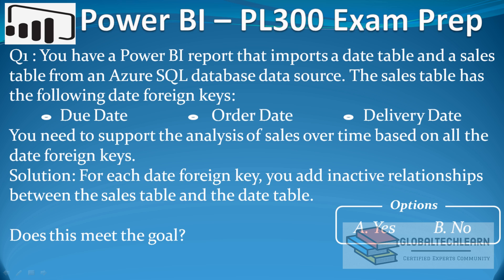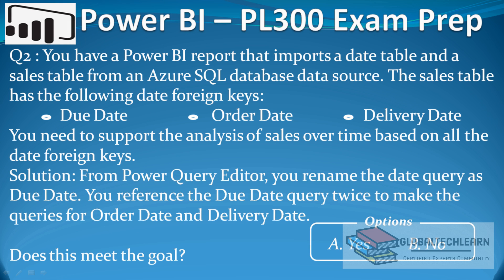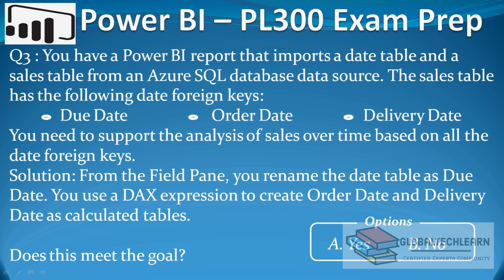In this question, the given solution is to create inactive relationships between dates and sales. In the second question, with the same model, we have to create a reference from due date twice — to order date and delivery date — within the date dimension tables. So in Power Query Editor we rename the date query as due date, then create a reference from due date twice to make queries for order date and delivery date. In the third question, we rename the field pane and create a reference from due date, then use a DAX expression to create order date and delivery date as calculated tables.